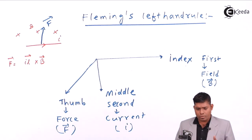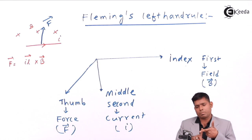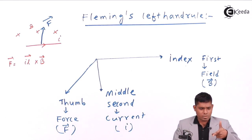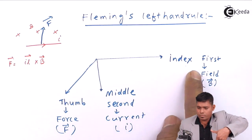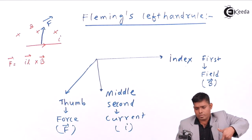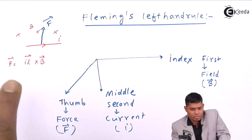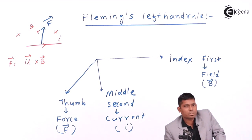For Fleming's left hand rule, hold the three fingers in mutually perpendicular positions. The first finger must be in the direction of the field — the field is into the page, so it points downward like this. The middle finger is in the direction of current, which is in this direction. You can see: first finger for field, second finger for current, and the third — the thumb — gives the direction of motion, so the conductor moves this way.